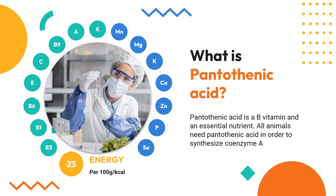What is pantothenic acid? Pantothenic acid is a B vitamin and an essential nutrient. All animals need pantothenic acid in order to synthesize coenzyme A, essential for metabolizing fatty acids, and to synthesize and metabolize proteins, carbohydrates, and fats.